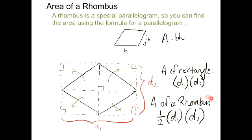And that, in fact, is what our formula is. Area of a rhombus is 1 half diagonal one times diagonal two. So now let's move on to a few problems.